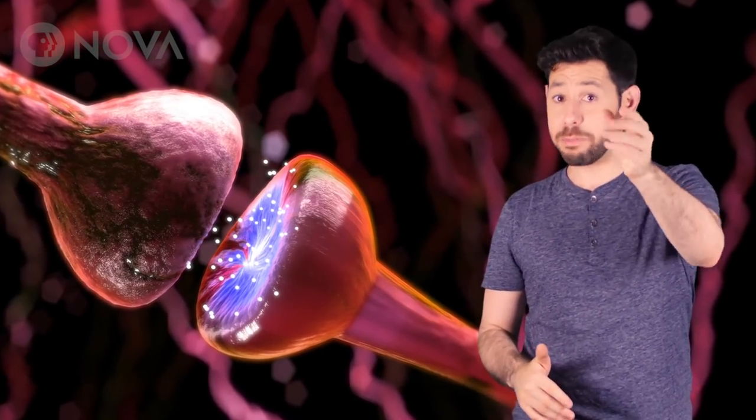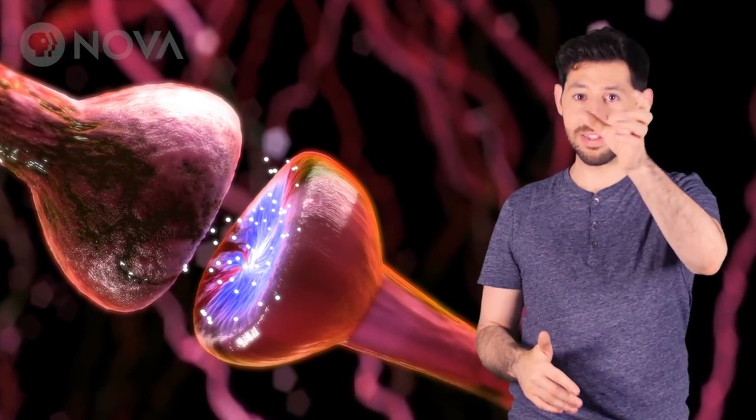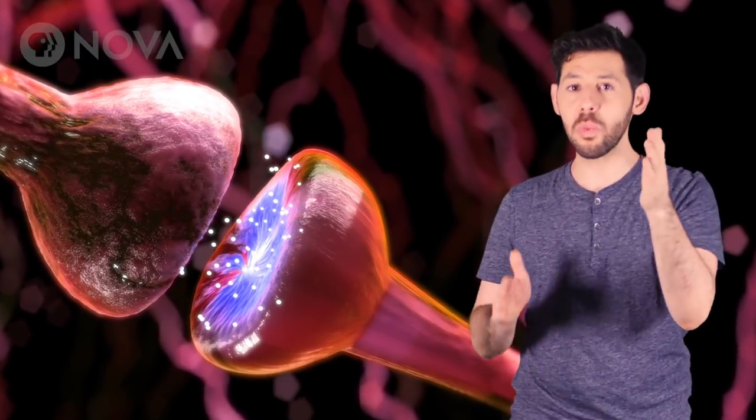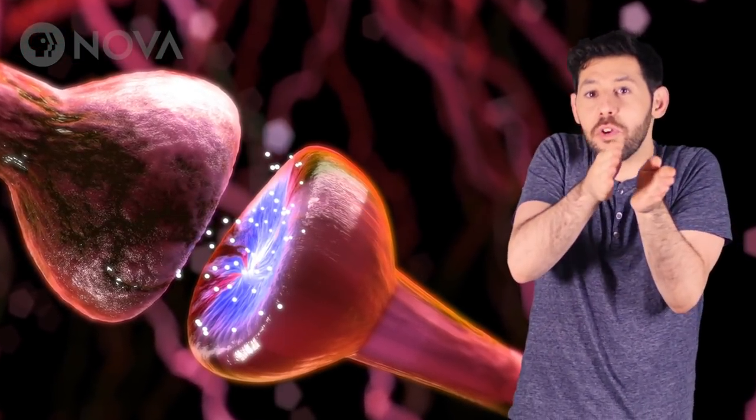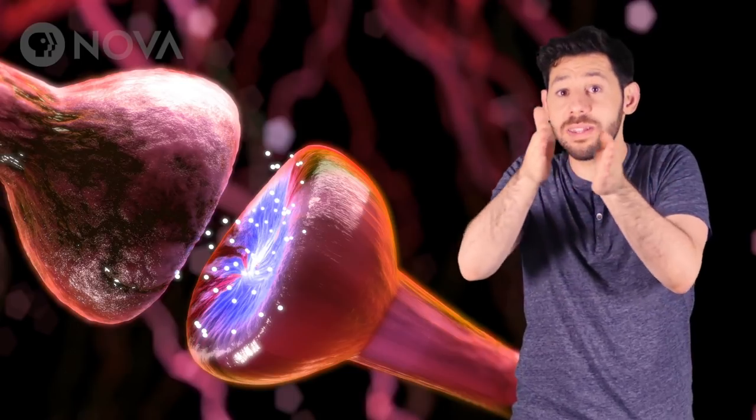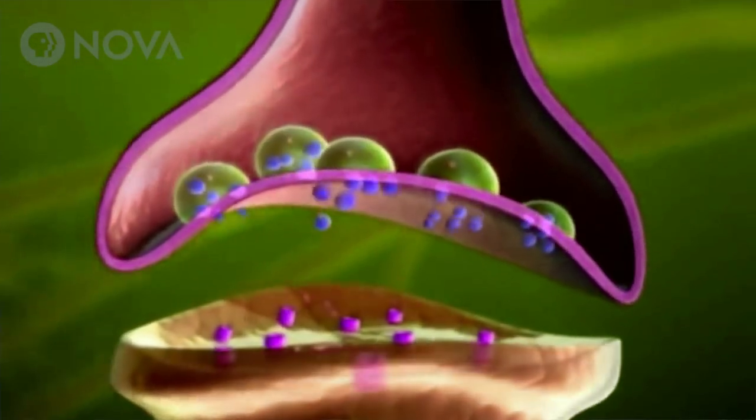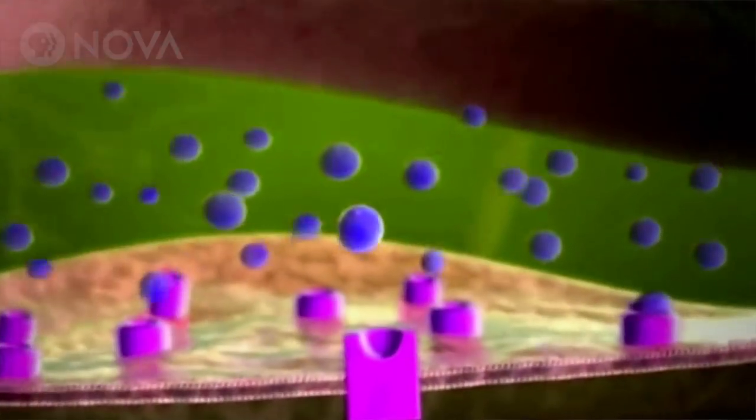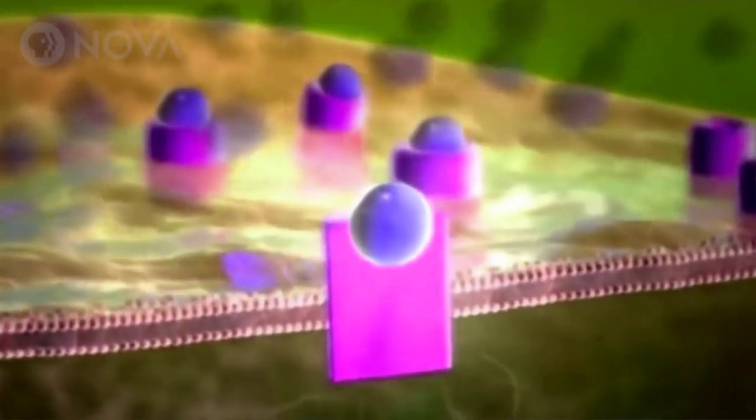So that little space between neurons? That's called a synapse. And that controls whether or not the signal can travel from one firing neuron to its neighbor. And that signal can only cross if there are enough of a certain kind of molecule at that first neuron.